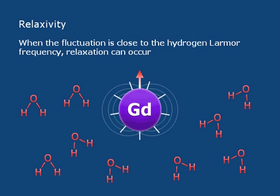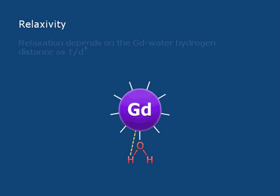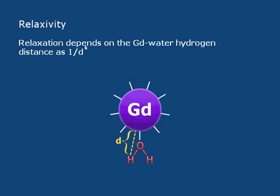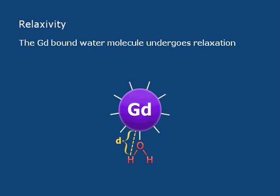I've shown the waters here as red, as a very tense kind of color. And when relaxation occurs, the water becomes blue and relaxed and very calm. Now, this relaxation effect depends on the distance between the gadolinium and the hydrogen as 1 over the 6th power. So we really want to get those waters as close to the gadolinium as possible. The way that contrast agents do this is there's a site where a water can actually come and bind directly to the gadolinium, and that's what makes this distance close. And when that occurs, that water then undergoes relaxation.